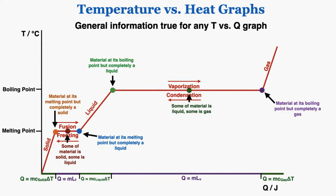We can compare specific points along the phase changes: at the point where the material is in its solid phase hitting its melting point, it's completely solid and ready to melt. At the halfway point of the fusion line, some material is solid and some is liquid. At the other end, the material is still at its melting point but is now completely liquid. The same pattern applies during vaporization and condensation.